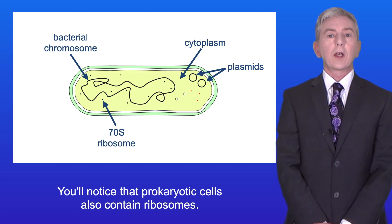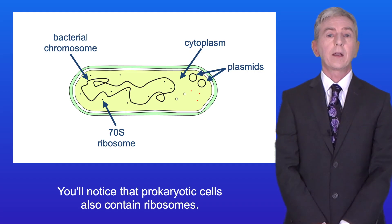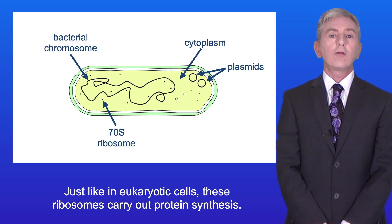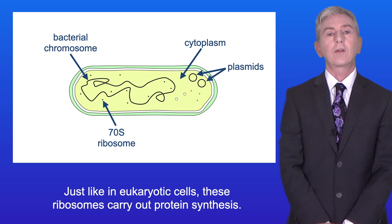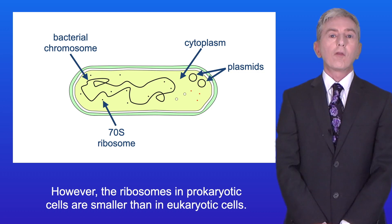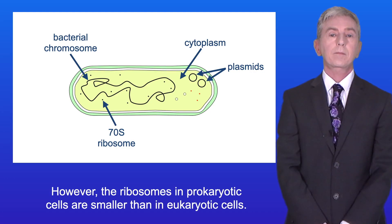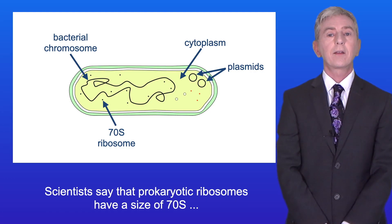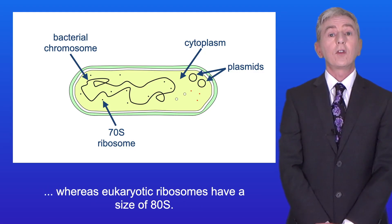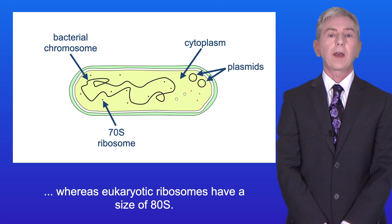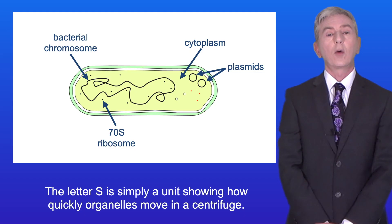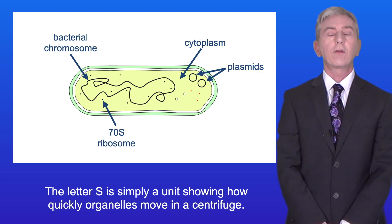Prokaryotic cells also contain ribosomes, and just like in eukaryotic cells, these ribosomes carry out protein synthesis. However, the ribosomes in prokaryotic cells are smaller than in eukaryotic cells. Scientists say that prokaryotic ribosomes have a size of 70S, whereas eukaryotic ribosomes have a size of 80S. The letter S is simply a unit showing how quickly organelles move in a centrifuge.